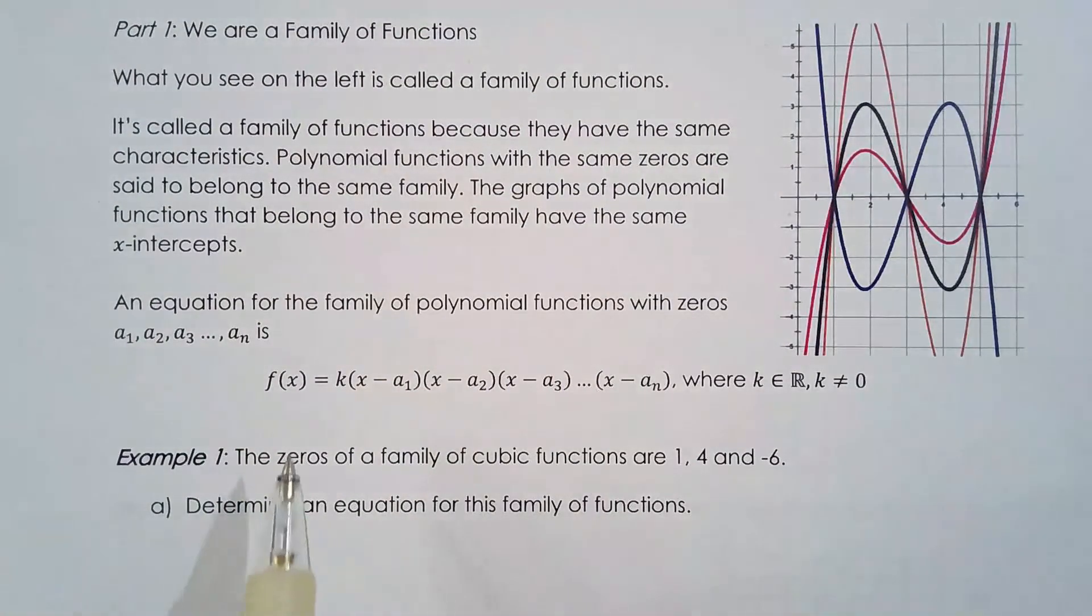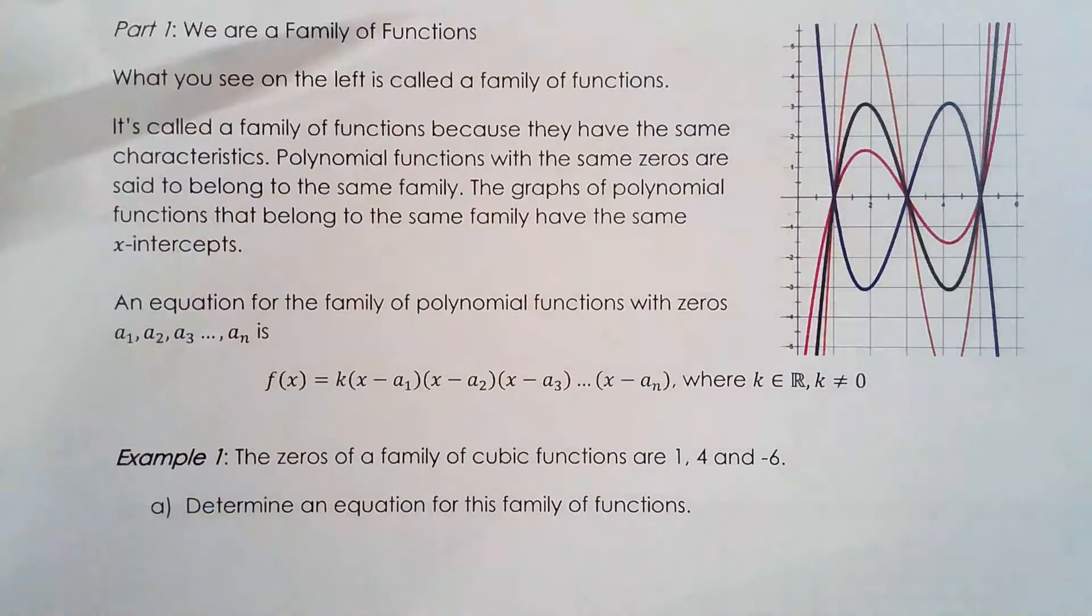And algebraically to represent a family of polynomial functions you'll write the individual factors and then you put the variable k here. k can be any real number but we can't let it be zero of course. If you let k equal zero then you have f of x equals zero. So if k is one that will represent a specific member of the family or two or three or four. So every time you let k be a different real number that's not zero then you have a different member of the family. And you'll see something like this on your graph.